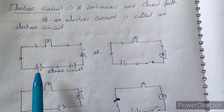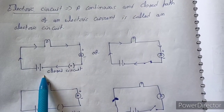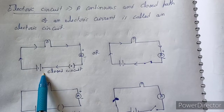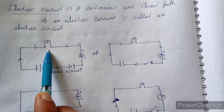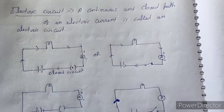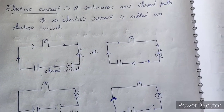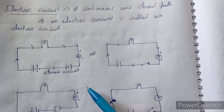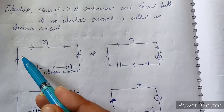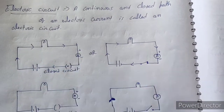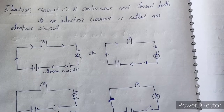This symbol means battery. A battery is called the source of electricity. And here we have a bulb as an element. I have an ammeter in the circuit. These are the conducting wires connecting the components of the electric circuit.